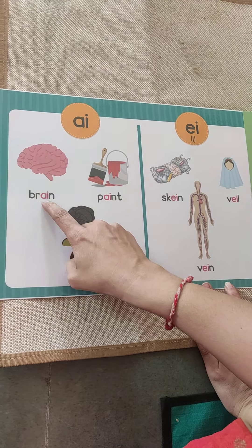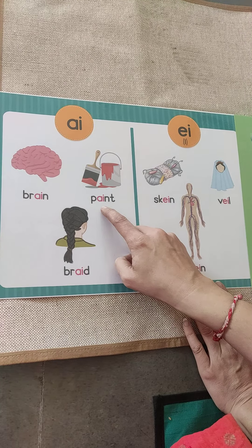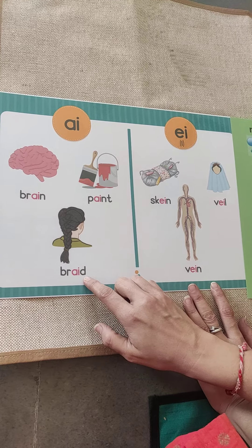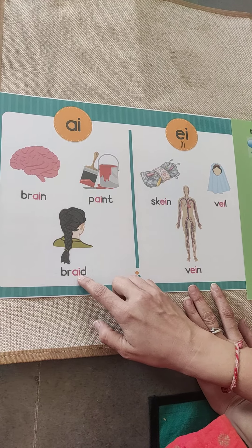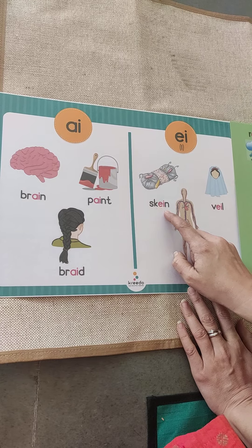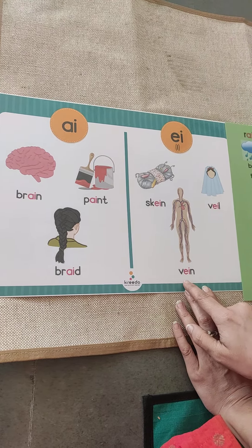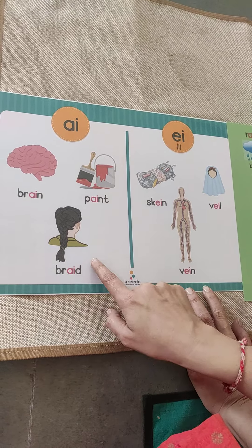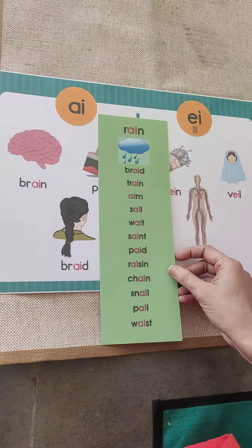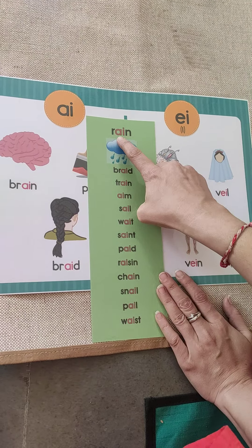Brain, paint, braid — AI. And here: skein, wale, wane. Both have the similar sound of A. Along with few words which were of AI.